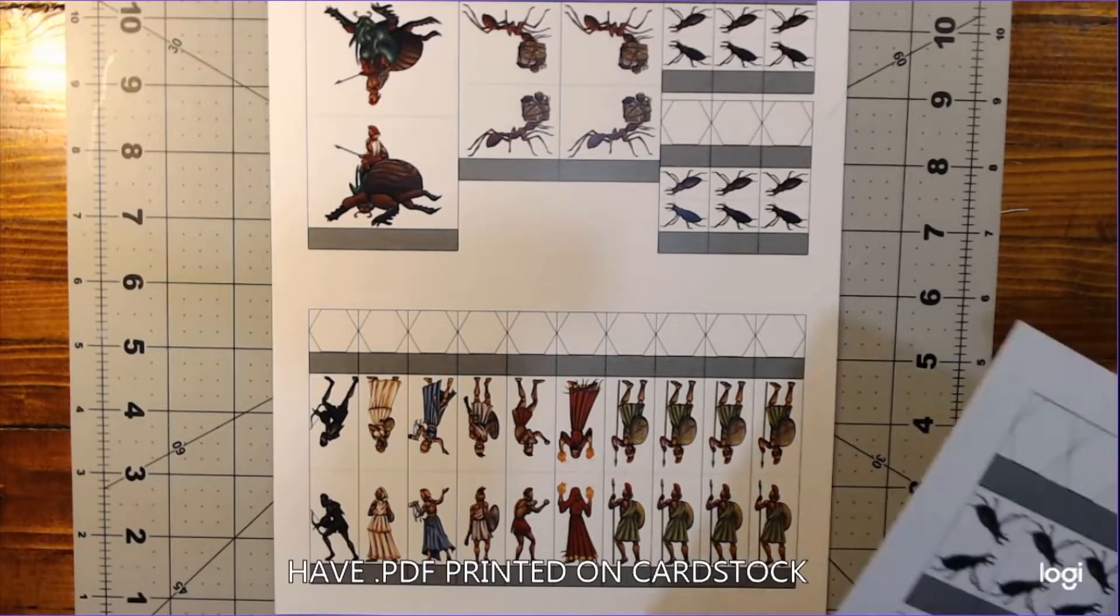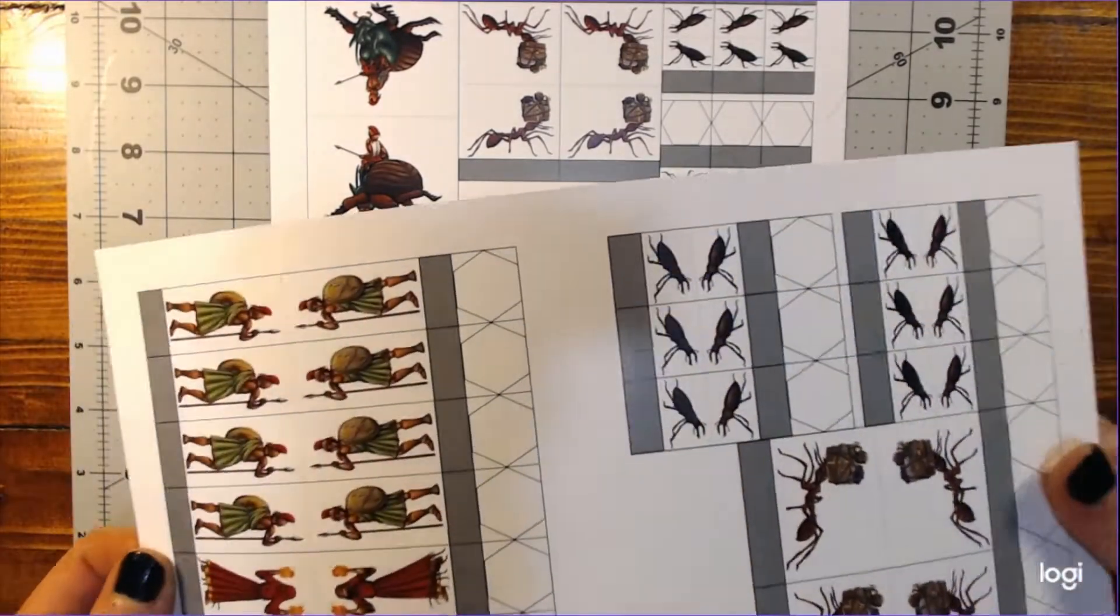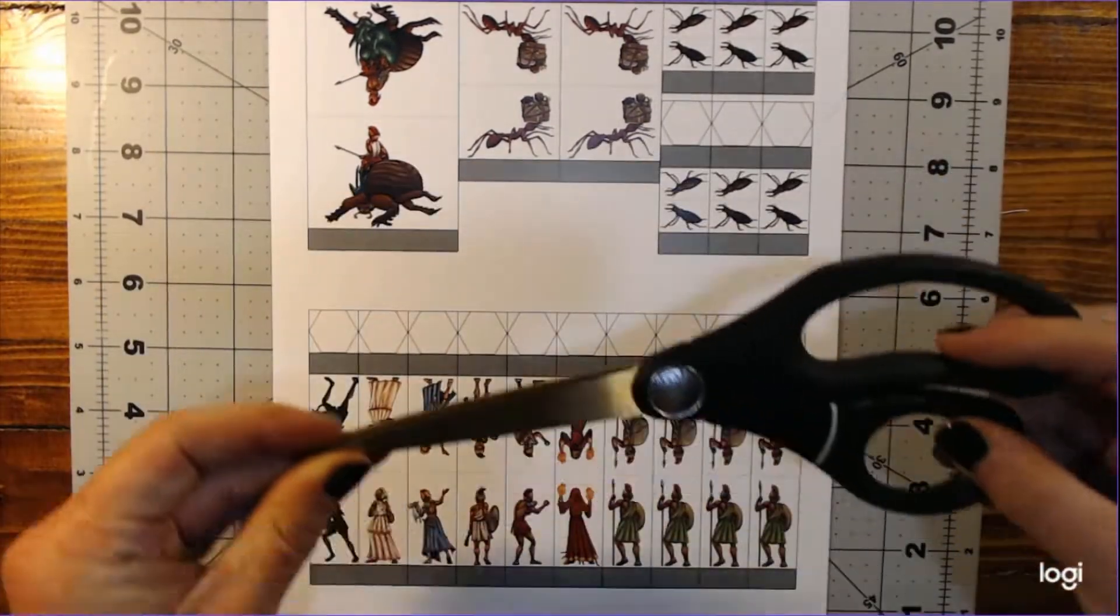To start, you'll need to have the PDF file of the paper minis printed on firm cardstock. You can do this at home with certain printers, or you can have your friendly local print shop do it for you.